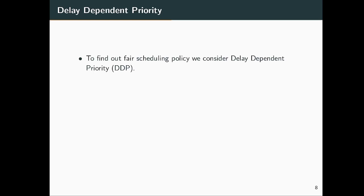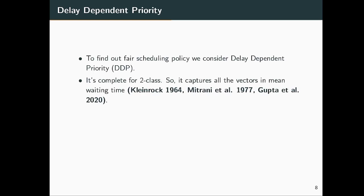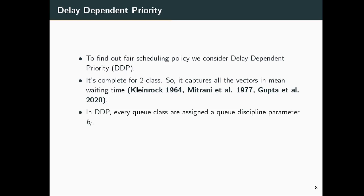Delay-Dependent Priority (DDP) was first introduced by Kleinrock in 1964. For the two-class game it is complete, as shown in Kleinrock 1964, Mitrani et al. 1977, and Gupta et al. 2020. Under DDP, a parameter b_i is assigned to each queue discipline, the instantaneous dynamic priority is calculated, and the server selects the highest priority class.